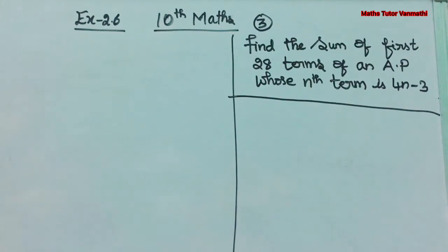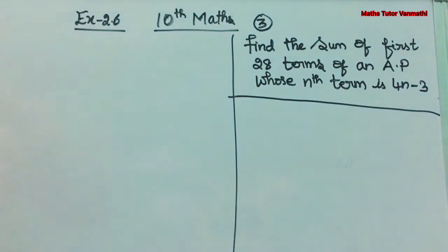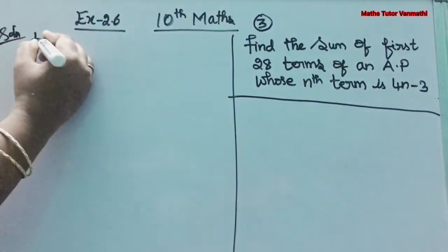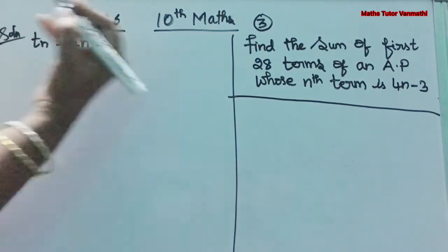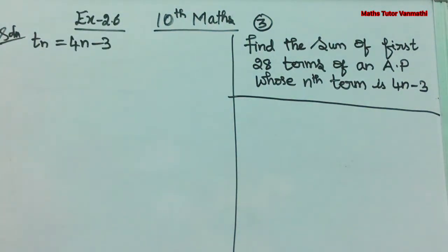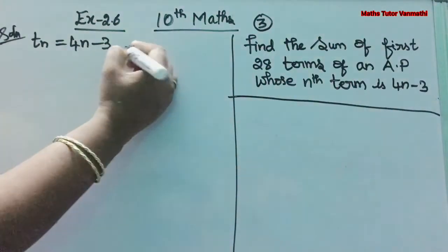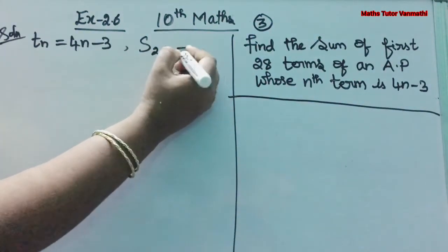Exercise 2.6, third problem: Find the sum of the first 28 terms of an AP whose Nth term is 4N − 3. In this question, they have given TN = 4N − 3. They are asking us to find the sum of the first 28 terms in arithmetic progression, that is S28.